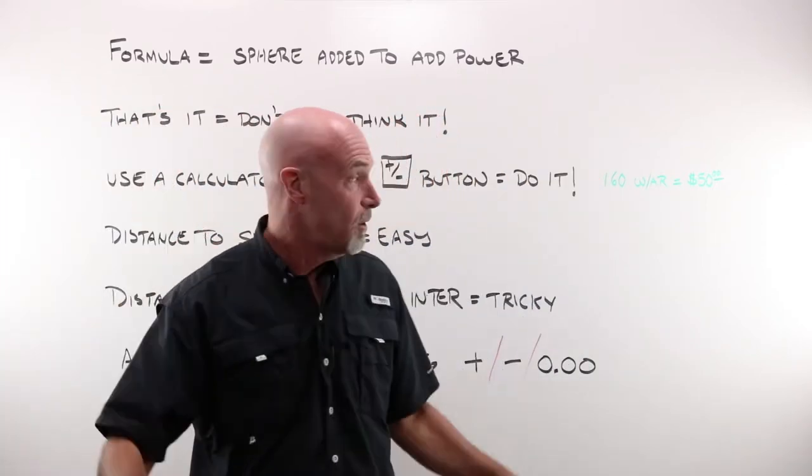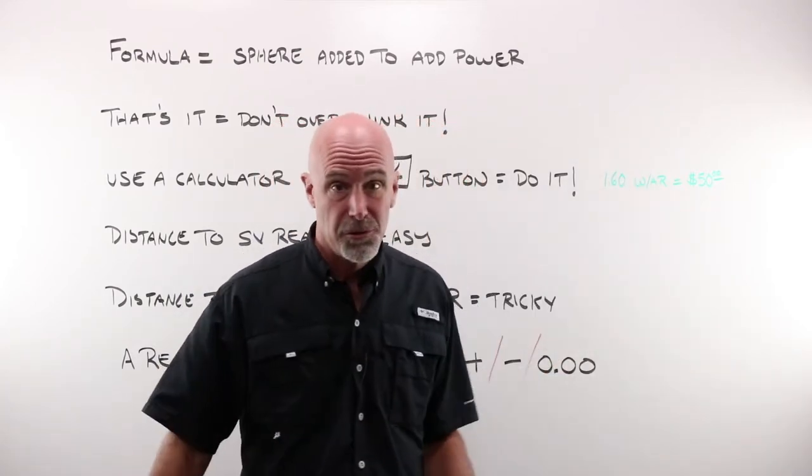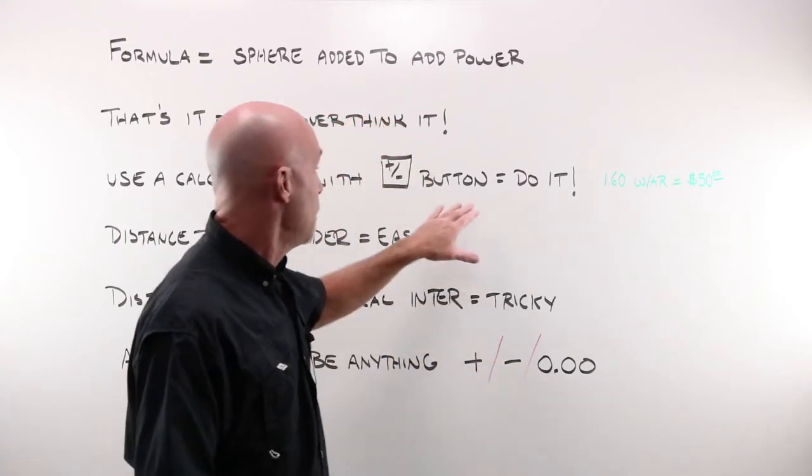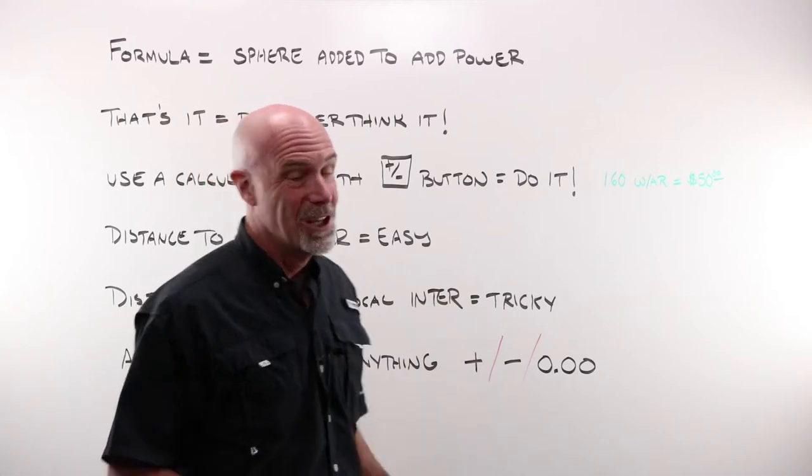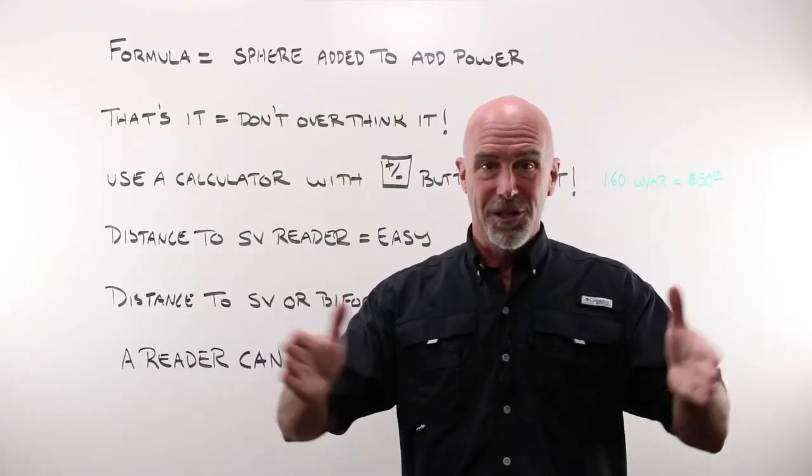A 1.60 with AR, $50 wholesale, $150 retail. Not to mention the loss of confidence in your customer. If you fail to use a calculator, add these two together wrong and make them a pair of readers that don't work. Use a calculator, okay?